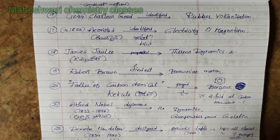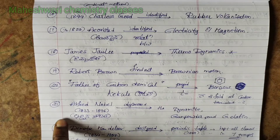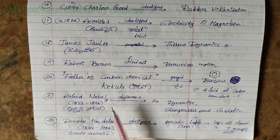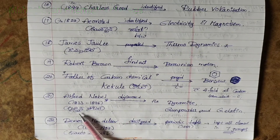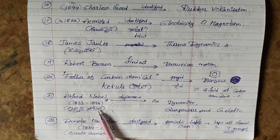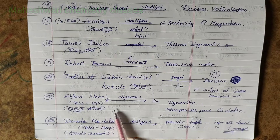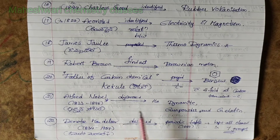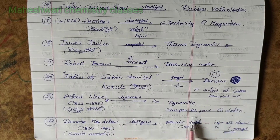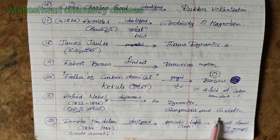21st point: Alfred Nobel, time duration 1833 to 1896. He discovered dynamite, gunpowder, and gelatin.